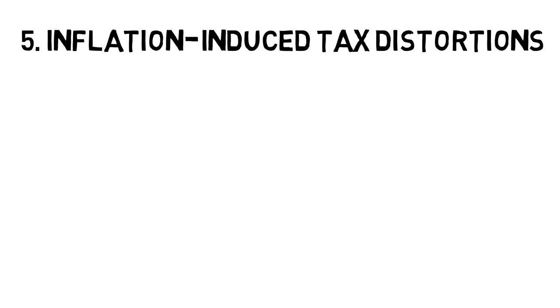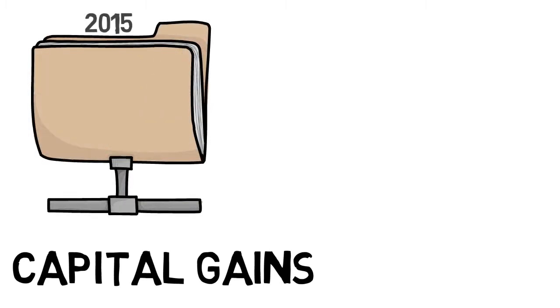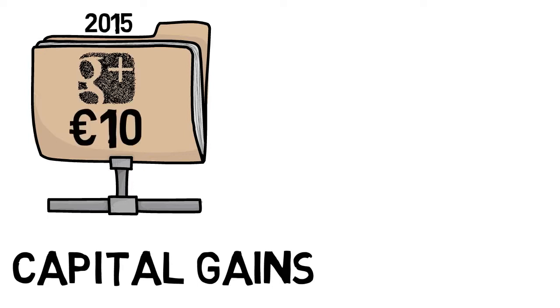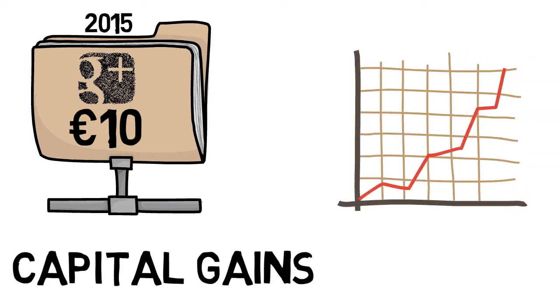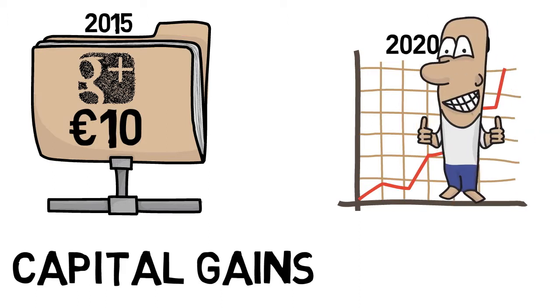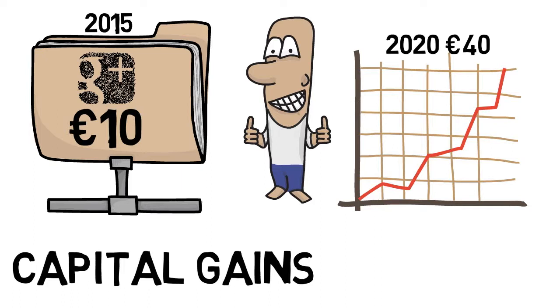Number five is inflation-induced tax distortions. Take the example of capital gains tax — a capital gain is the profit made by selling an asset for more than its purchase price, and tax is imposed on that profit. For example, if you bought a stock in Google in 2015 for 10 euro and over five years by 2020 that stock rose to 40 euro, you have made a capital gain of 30 euro and the tax would be based on that 30 euro.